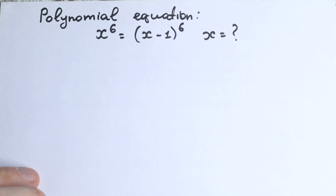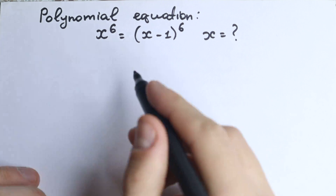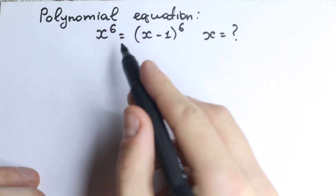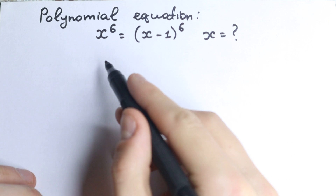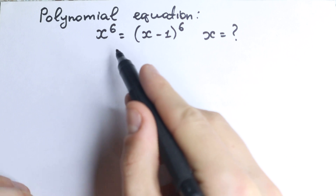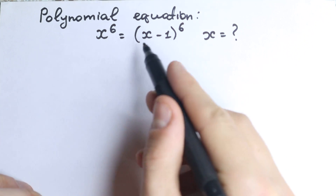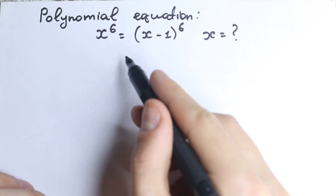Hello everyone! Welcome back to High Mathematics! In this video we're going to solve this really interesting polynomial equation: x to the sixth power equals x minus one to the sixth power.